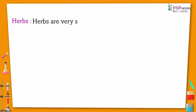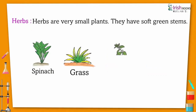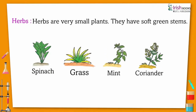Herbs are very small plants. They have soft green stems. Like spinach, grass, mint, coriander.